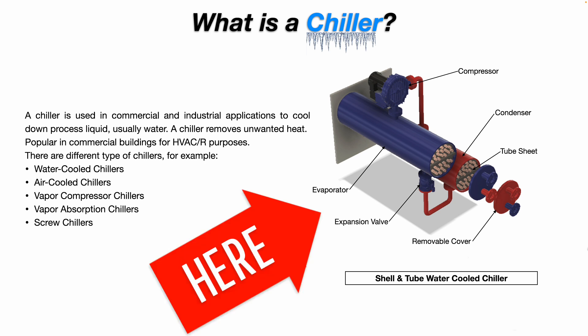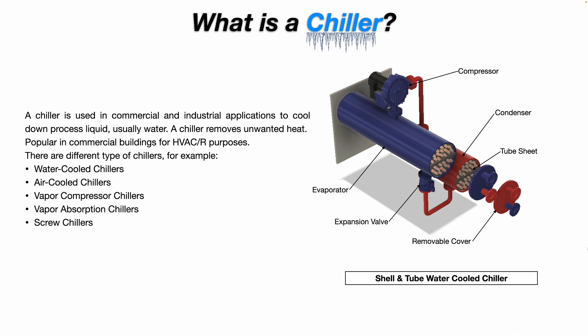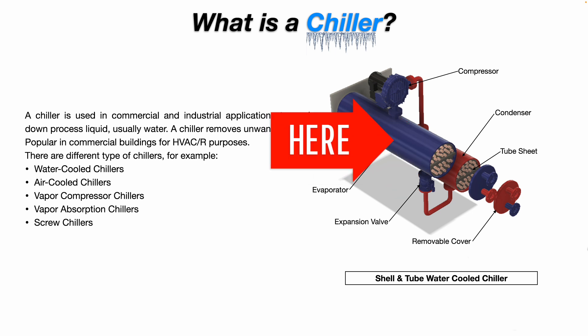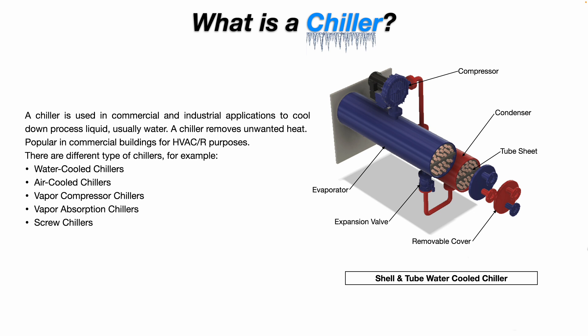The graphic on the right represents a water cooled shell and tube chiller. You can see the copper tubes and you can see the shell. The main components of a chiller are your compressor, your condenser, your expansion valve, your evaporator, and your tube sheet. The tube sheet is basically the metal plate between your removable cover and the inside of the tube — it's like a divider plate.